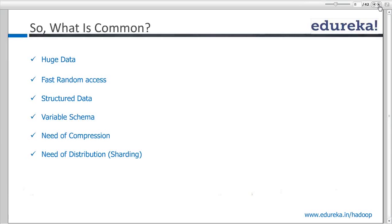As your data grows, you want automatic partitioning — you don't want to create a new partition based on certain columns each time. In HBase, as your data grows, it's automatically handled in the back-end. You don't have to decide a partition column or anything like that. It's automatically handled, which makes it pretty useful.